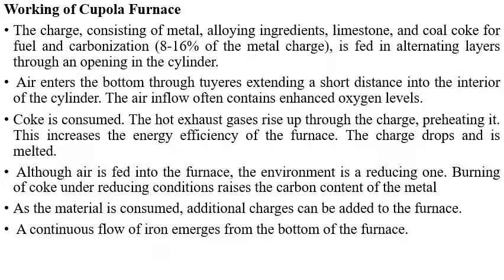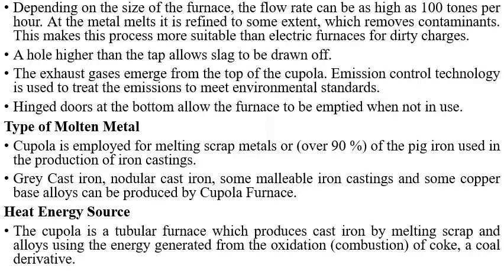As material is consumed, additional charges can be added to the furnace, allowing a continuous flow of iron to emerge from the bottom. Depending on the size of the furnace, the flow rate can be as high as 100 tons per hour. The metal is refined to some extent, removing unwanted constituents. A hole higher than the tap allows slag to be drawn off. Exhaust gases emerge from the top of the cupola and are treated with emission control technology to meet environmental standards. Hinged doors at the bottom allow the furnace to be emptied when not in use.